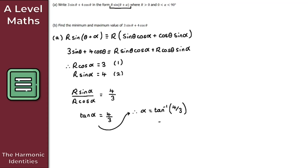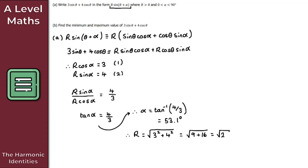We also need r, which we find using Pythagoras: r = √(3² + 4²) = √(9 + 16) = √25 = 5. You may recognize this as one of our Pythagorean triples.